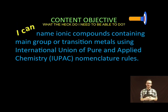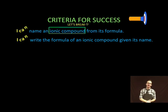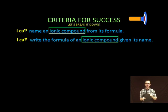We are going to name ionic compounds containing main group or transition metals using International Union of Pure and Applied Chemistry IUPAC nomenclature rules. As always, let's take a moment to break it down a little bit. First thing we're gonna do is name ionic compounds from its formula and then we're gonna write the formulas given its name.